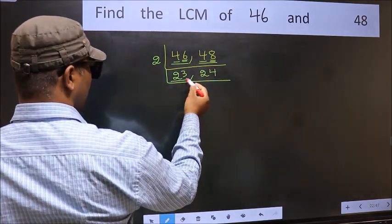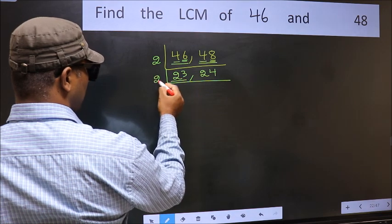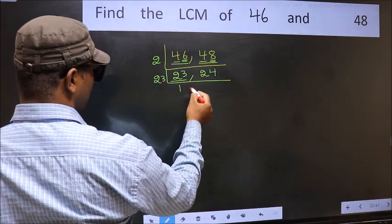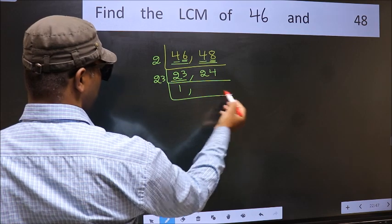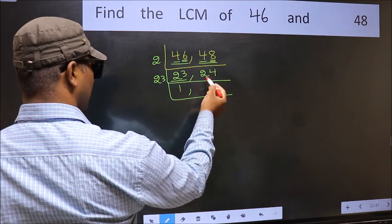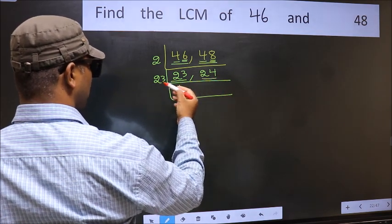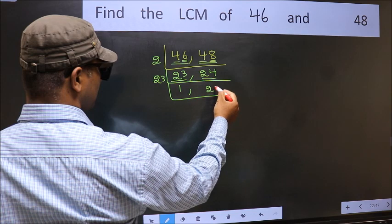Now here we have 23. 23 is a prime number, so 23 × 1 = 23. The other number is 24, which is not divisible by 23, so we write it down as it is.